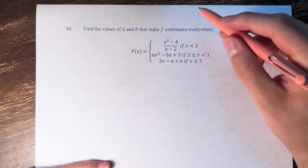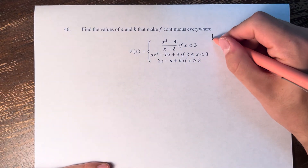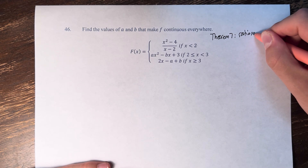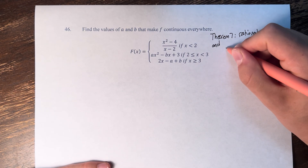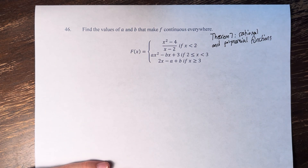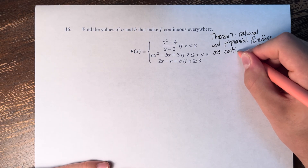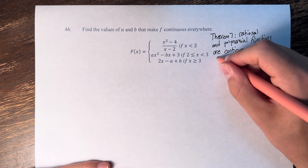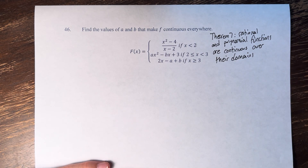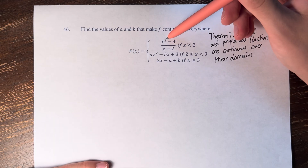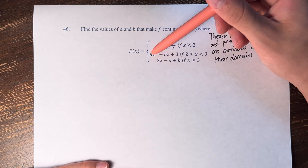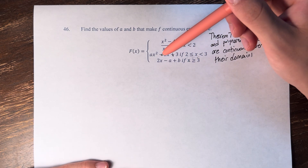We have a rational function and two polynomials. From Theorem 7, rational functions and polynomial functions are continuous over their domains. So if x is less than 2, this function is continuous. If x is between 2 and 3, not including 2, this function is continuous. And if x is greater than 3, this function is continuous.